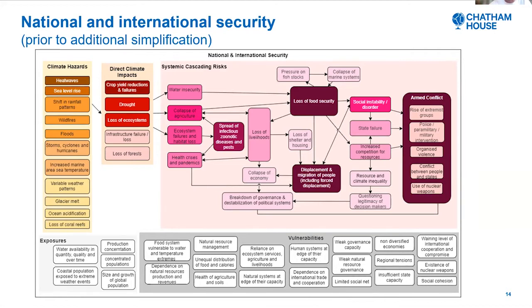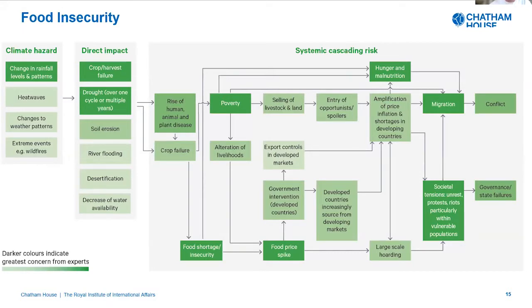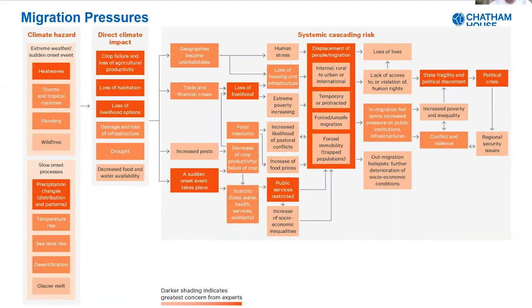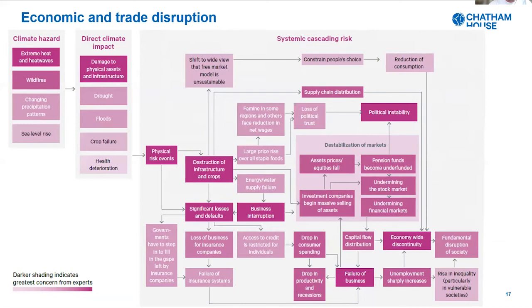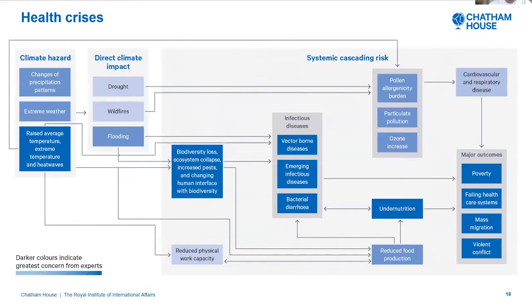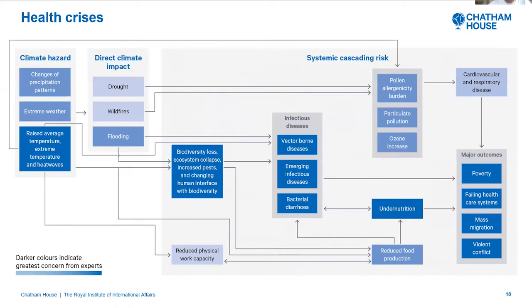It's so key to keep in mind: how do you retain the impact of the message you're trying to convey whilst also thinking about your audience — in this case heads of state and heads of government? Hovering on some of the other diagrams: this is food security, and you can see that rise of human, animal and plant diseases features again through to migration and displacement of people, economic and trade disruption, health crises, and then finally energy security. Thank you very much for your time.